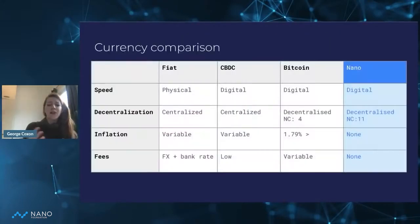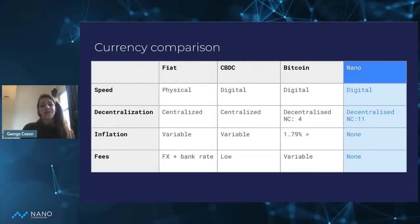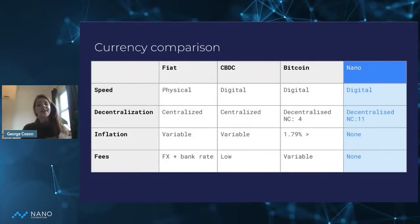If we look at a currency comparison between fiat, CBDCs, Bitcoin, and Nano, you can see the variation. You've got centralization of fiat and CBDCs, while Bitcoin and Nano, obviously being cryptocurrencies, have decentralization as absolutely key.